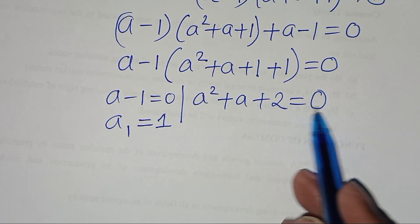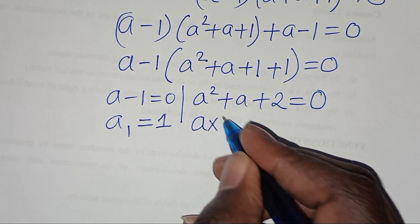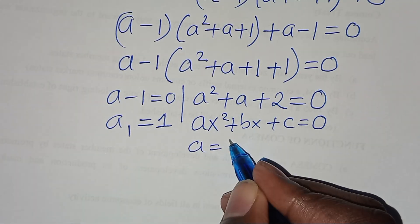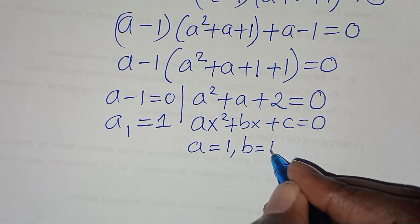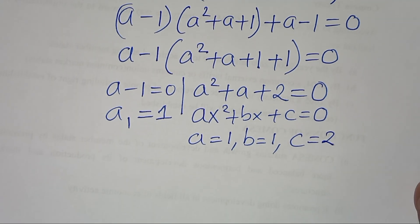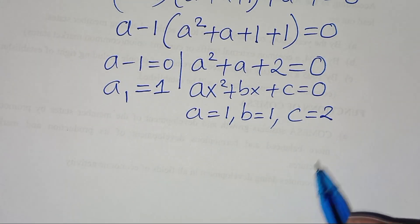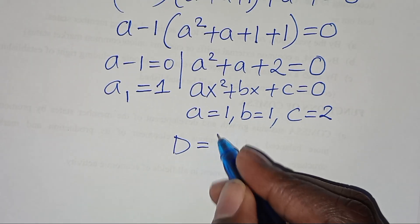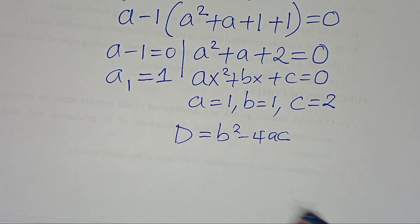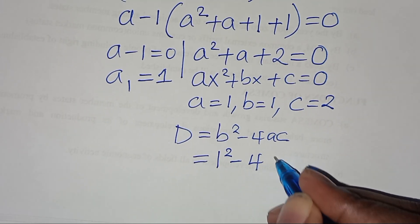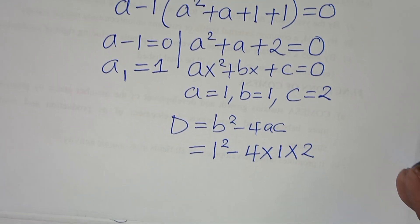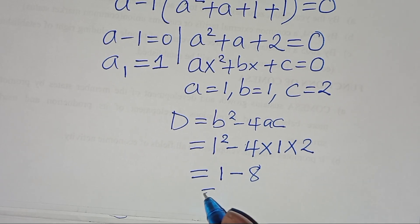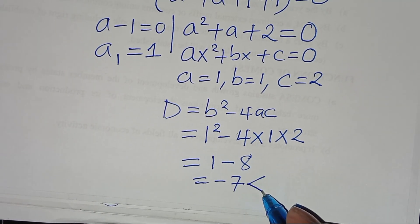The second part is a quadratic equation of the form ax squared plus bx plus c equals 0. From here, we have the value of a equal to 1, the value of b equal to 1, and the value of c equal to 2. This implies we can assess the nature of the roots by determining the discriminant, which is b squared minus 4ac. That is 1 squared minus 4 times 1 times 2, which gives 1 minus 8, equals minus 7, which is less than 0.